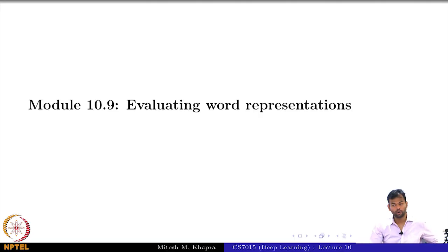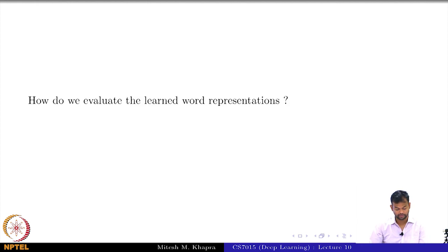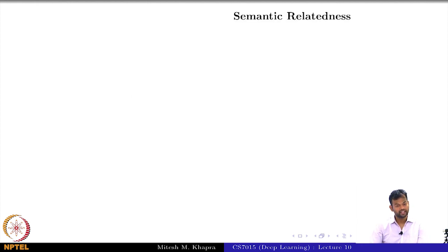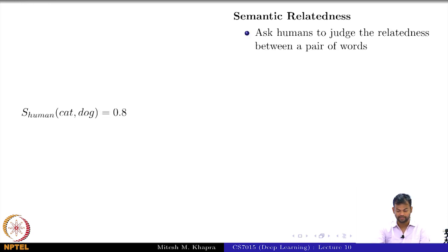So now we come to this important part about how do you evaluate word representations. There are different tasks that are set up. Semantic relatedness is one way of evaluating word representations.